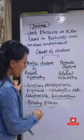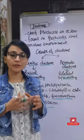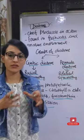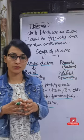Diatoms are usually divided by binary fission, which is the asexual mode of reproduction.